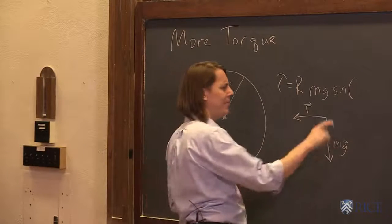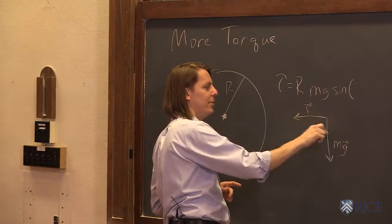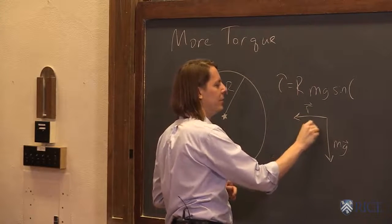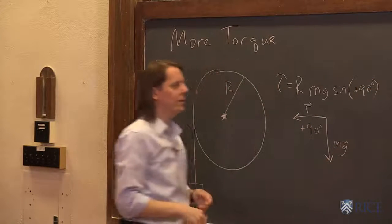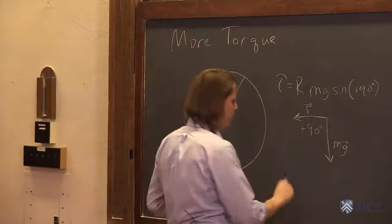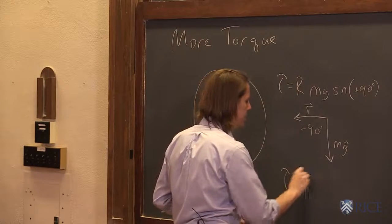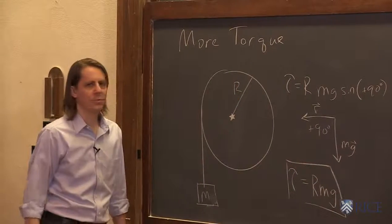So the string always hangs around a circle such that it pulls down at 90 degrees. And is it positive 90 or negative 90? Well, R to mg, that's counterclockwise to get from here to here. So it's positive 90 degrees. And of course, the sine of positive 90 degrees is 1. So the torque is just RMG. In this fairly well-known case is RMG.